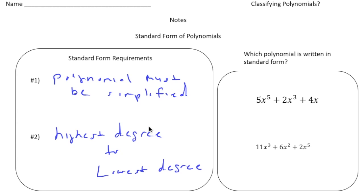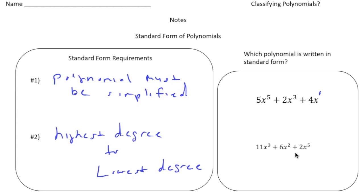Take a look on the right hand side — which polynomial is written in standard form? Here we have 5x to the fifth plus 2x cubed plus 4x. None of these terms can be combined, so it's simplified. Notice that the degrees are in order from highest to lowest: 5, 3, and then 1.